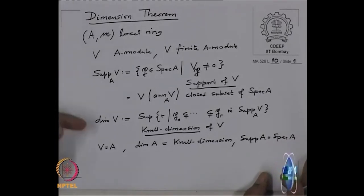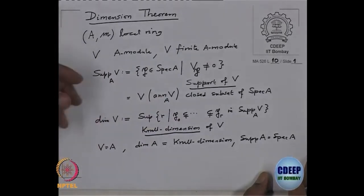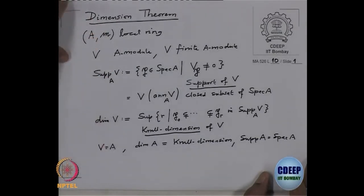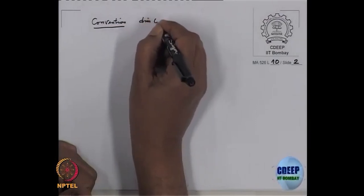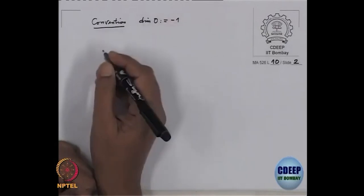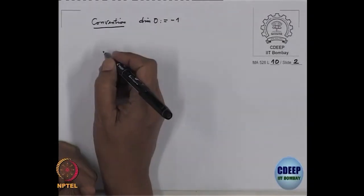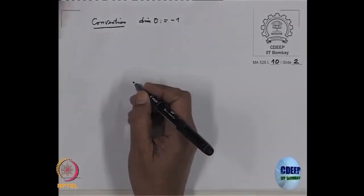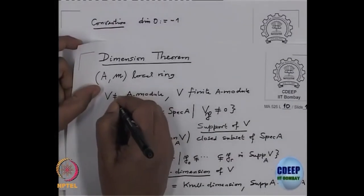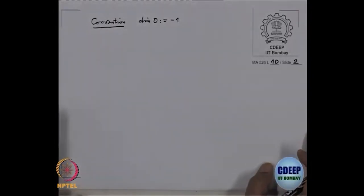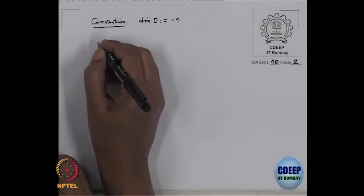A priori it is not clear that this supremum is finite. We will prove today that it is finite if the ring is local. The dimension of the zero module is minus one by convention, and V is assumed non-zero in the above. So we had to make the convention that the dimension of the zero module is minus one.